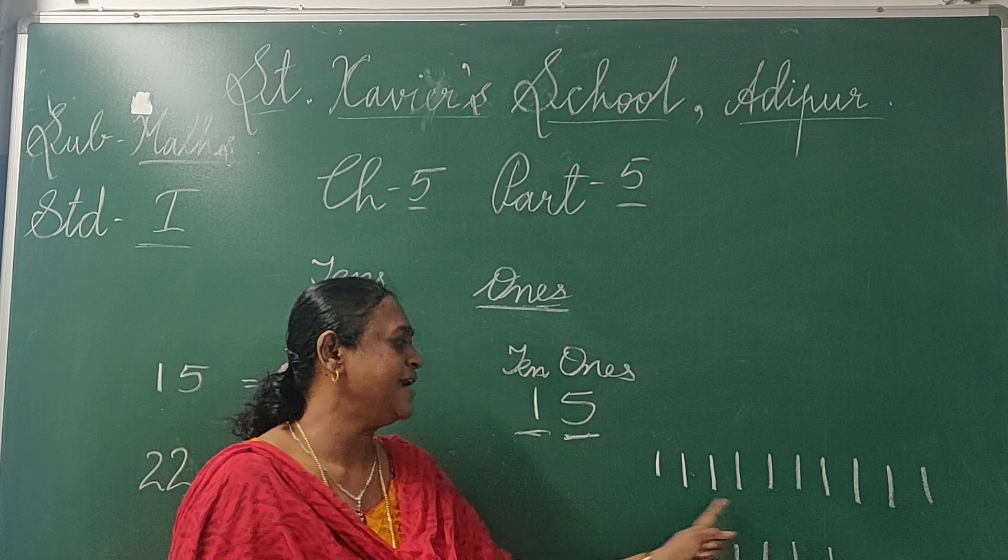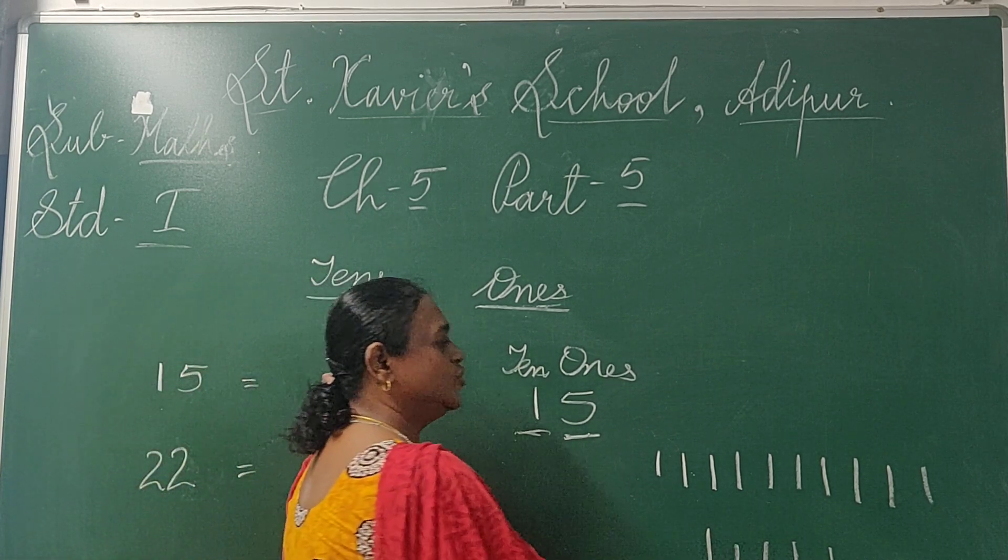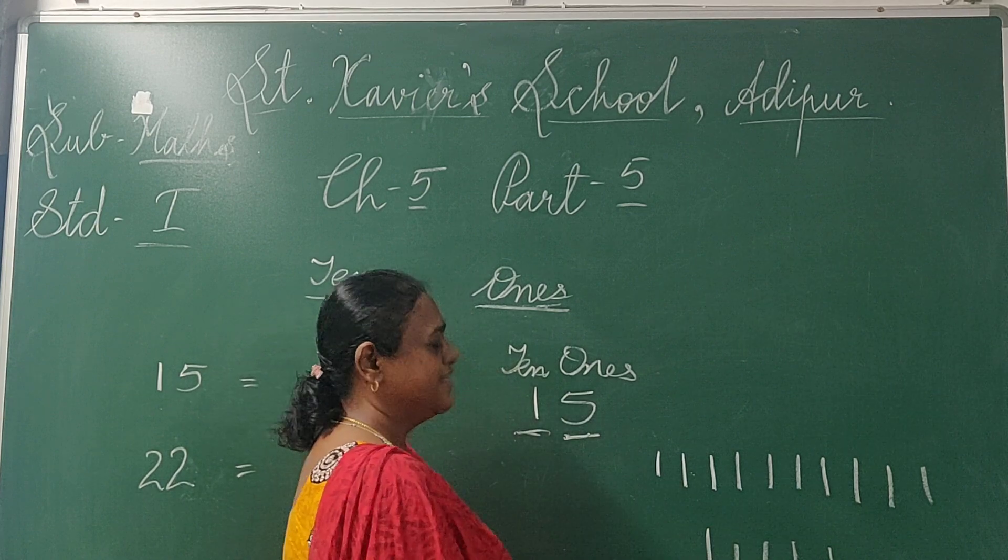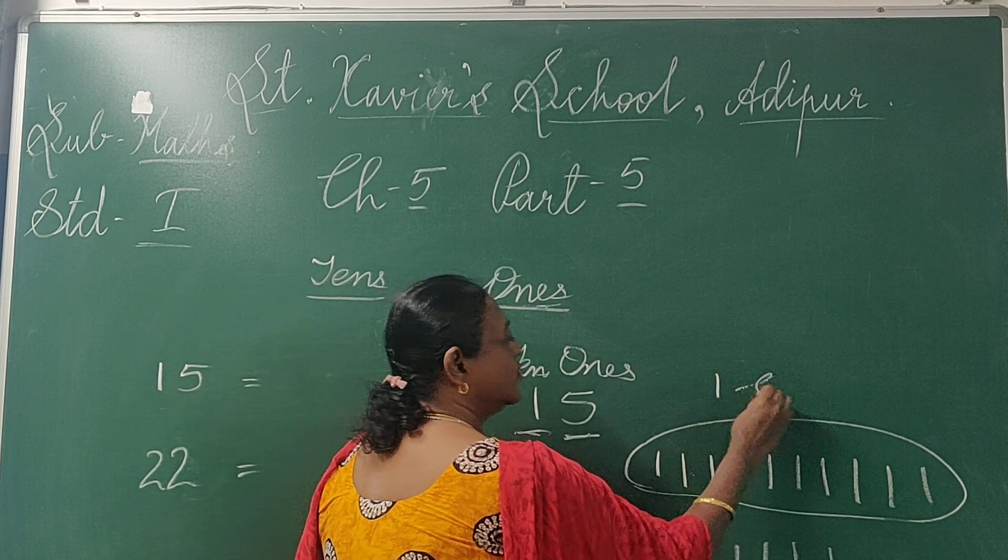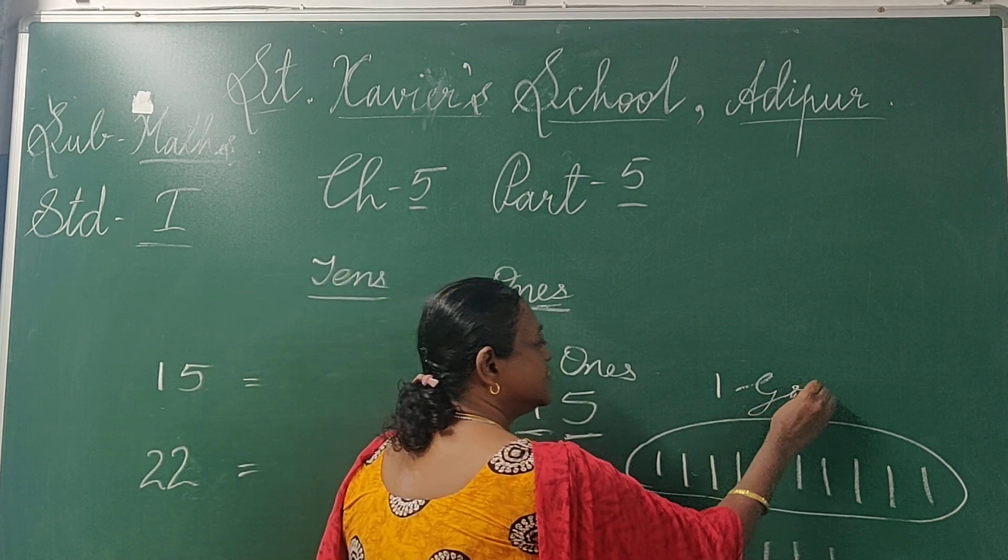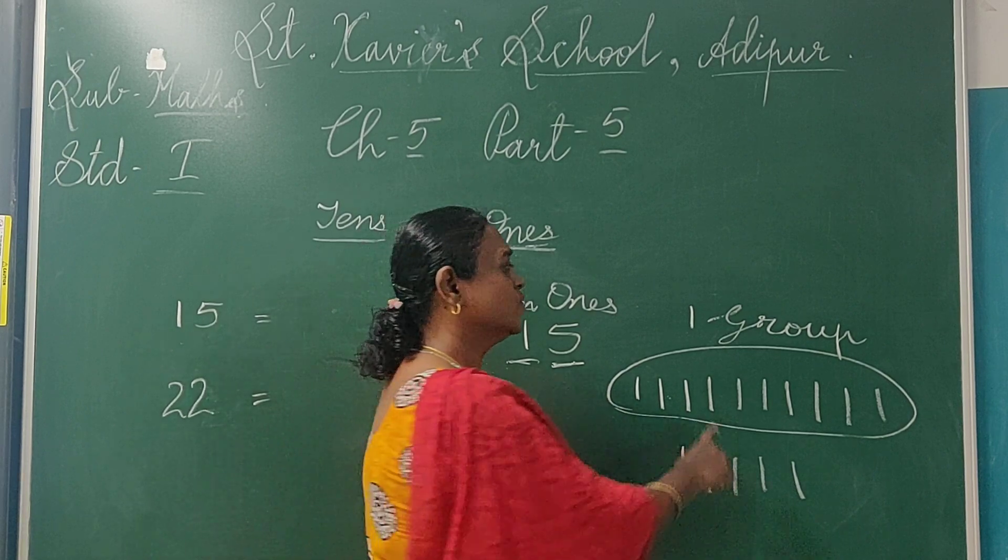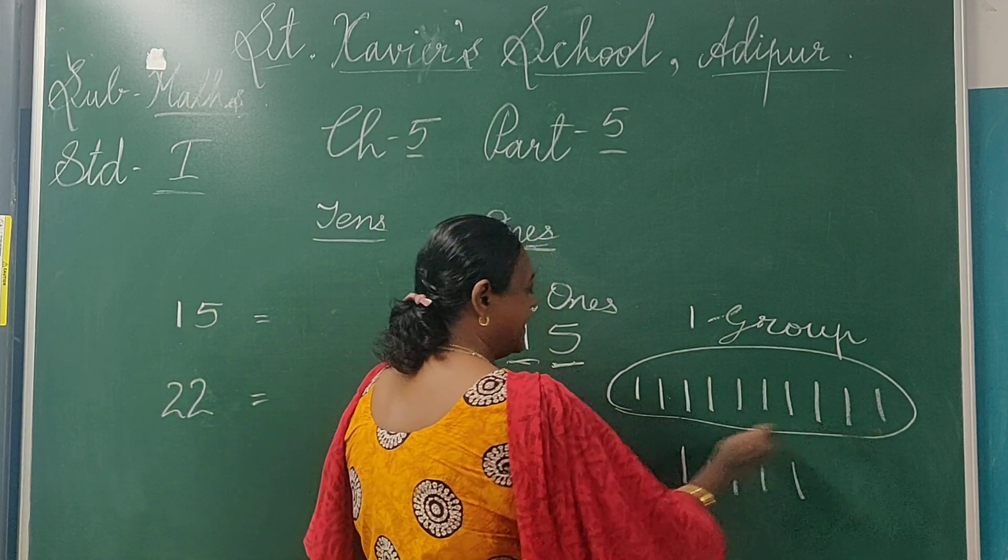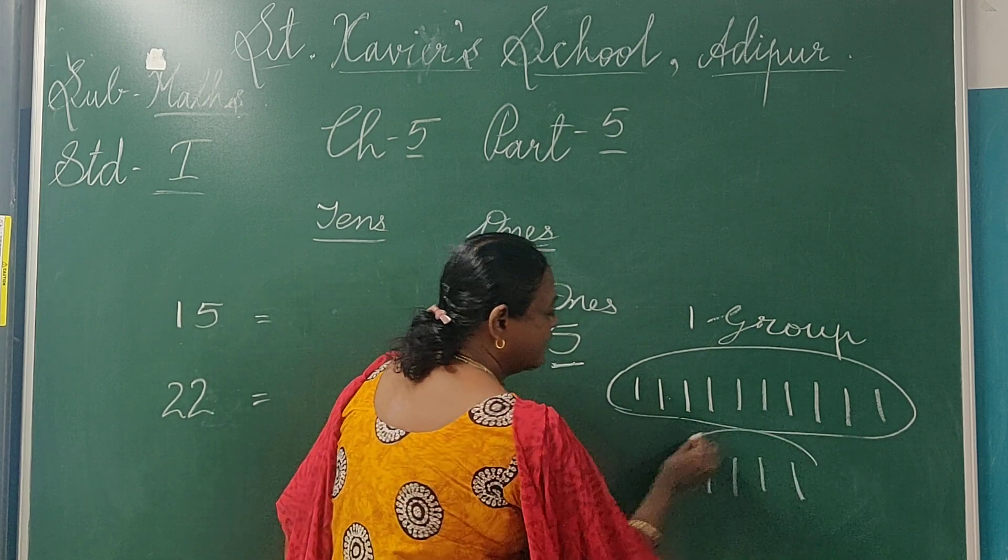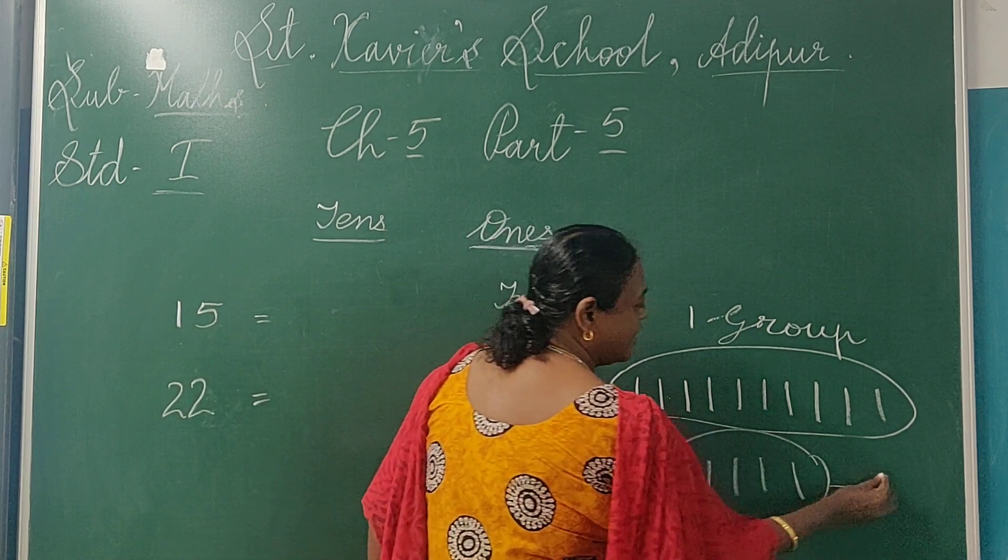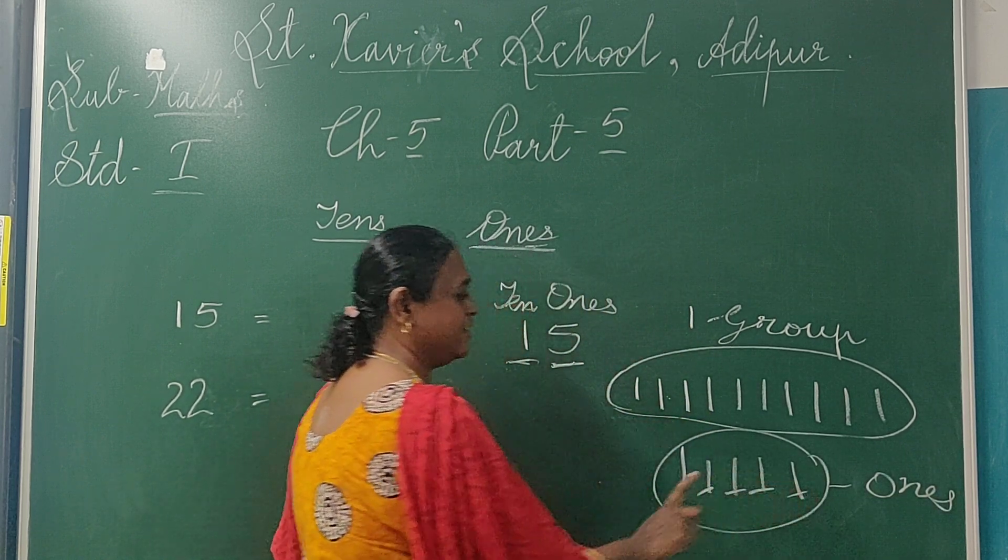Now how many have I written? 15. Now see what are tens. Total is 15. In this, one group of 10. How many groups is this? This is one group. This is one group of 10 pencils or ones, anything. And 5 are ones. What is this? One group. Okay children, 1, 2, 3, 4 and 5.